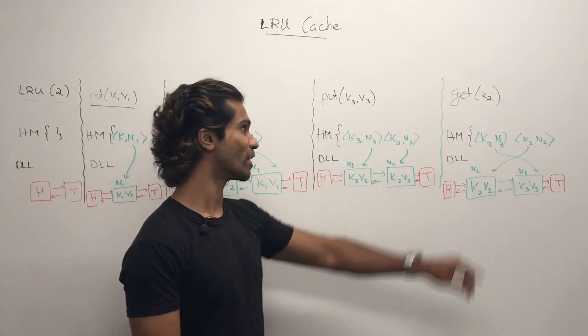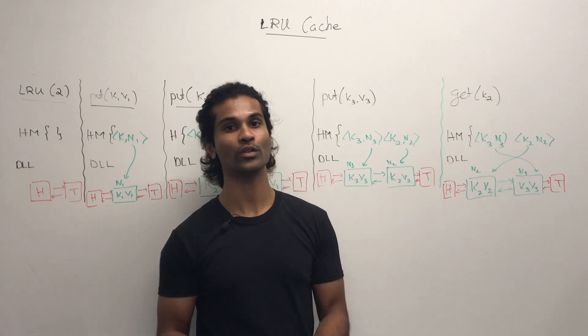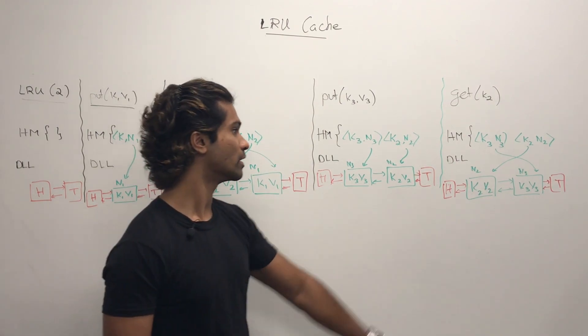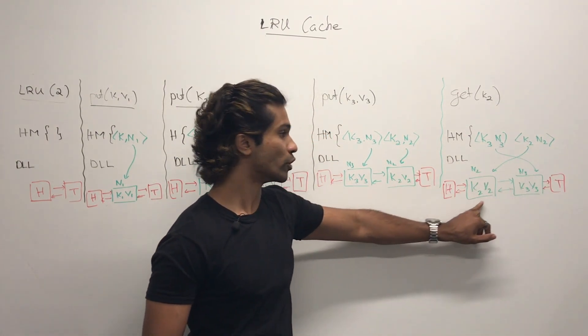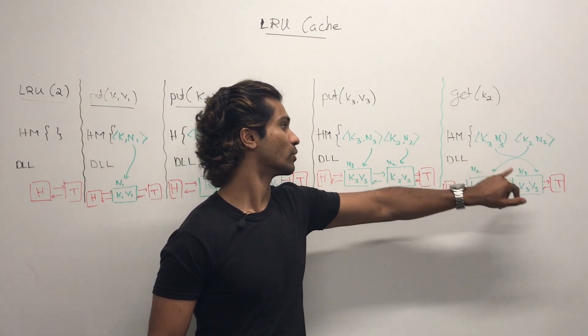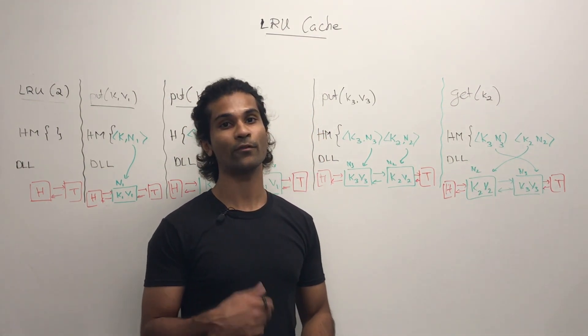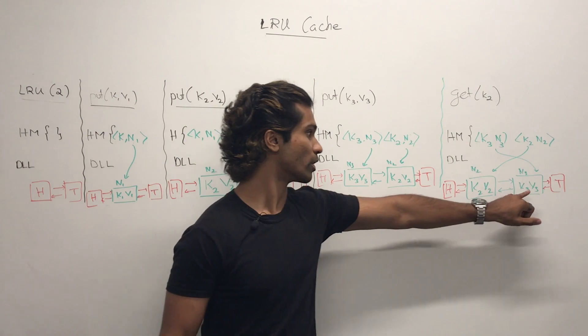Finally, I call get of k2. The hash map doesn't change, but the nodes in the doubly linked list change order. So k2n2 goes to the head and k3n3 goes to the tail. If we have to evict a node, this one is going to get evicted.